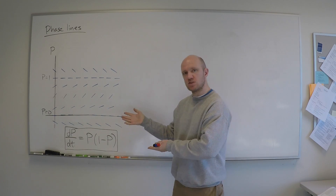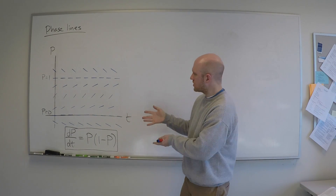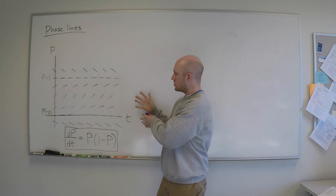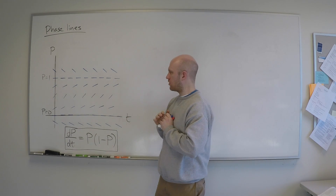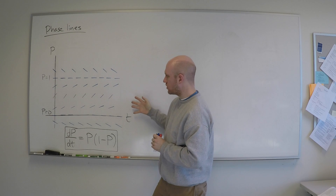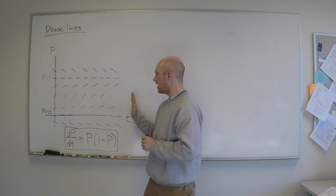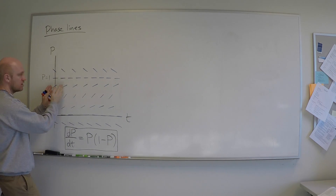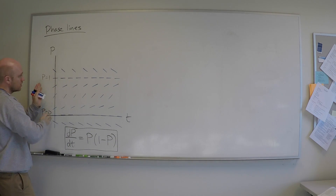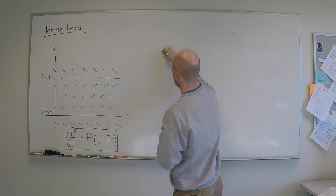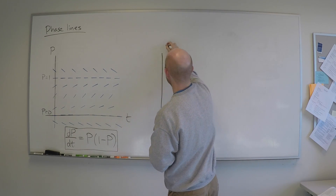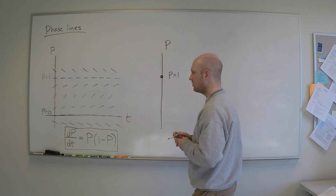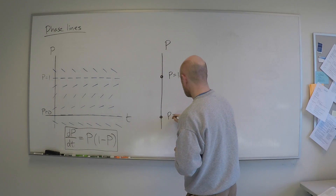The observation that leads us to a phase line is to take this slope field and collapse all of the redundant information out of it. Because this is an autonomous equation, as I move left and right, the slope field doesn't change. So let's squish this whole picture down and convey that same information in a single line — this will be the phase line. Here's the phase line, p. I'll mark in the equilibria: p equals 1 and p equals 0.